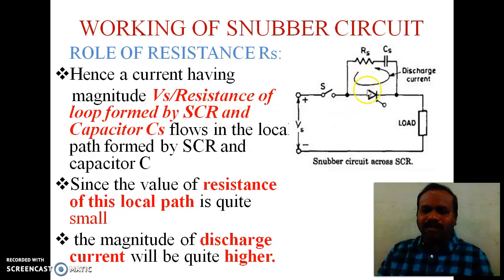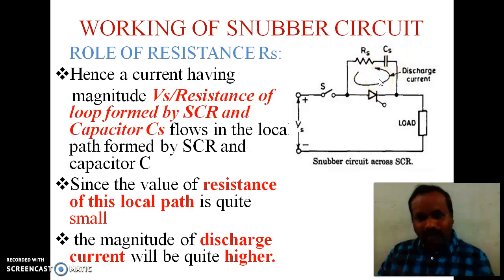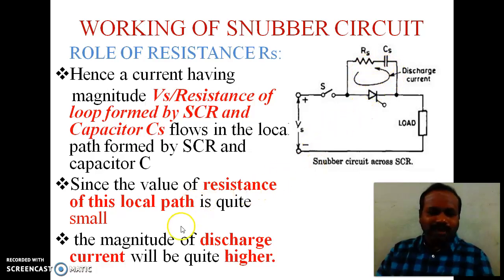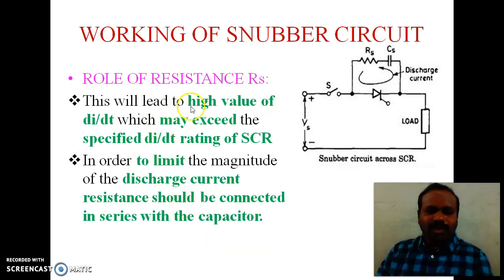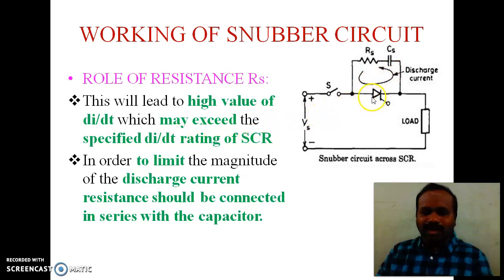Practically, the value of this loop resistance is very very low. If the loop has very low resistance, it allows very high current — that is, the discharge current is very high. This increases the rate of rise of current, di/dt, which may exceed the specified di/dt rating of the SCR. If the discharge current exceeds the specified di/dt rating, then the SCR will get damaged. In order to limit the magnitude of this discharging current, we add a series resistance RS connected in series with the capacitor.